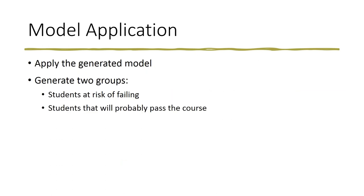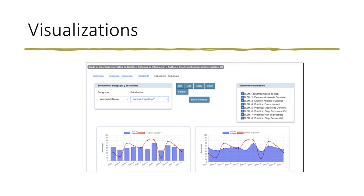Once the model has been generated, the teacher can anytime apply the model in the course, which will generate two groups: one with the students at risk of failing, and another with the students that will probably pass the course. Once the groups have been generated, the teacher is provided with different visualizations that will help not only to see which students are at risk, but also to analyze their learning process.